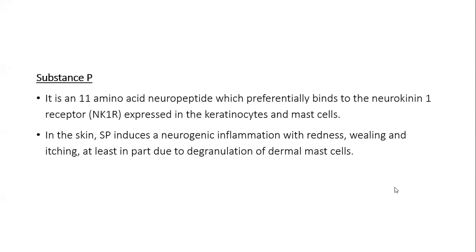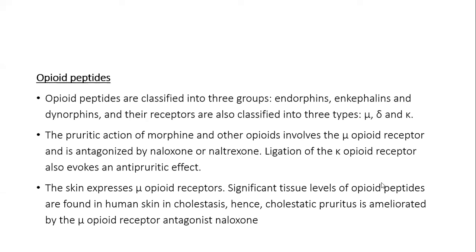The third mediator is substance P, an 11-amino acid neuropeptide which preferentially binds to neurokinin-1 receptor expressed in keratinocytes and mast cells. In skin, substance P induces neurogenic inflammation with redness, whealing and itching, at least in part due to degranulation of dermal mast cells.